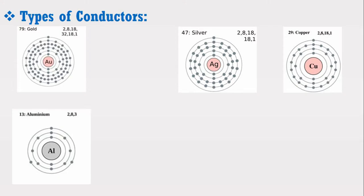Aluminum has three electrons in the outer shell. Three electrons in the outer shell means it will have lesser conductivity compared to copper. However, aluminum is widely used in overhead transmission due to various other advantages, which will be covered in the next lecture.